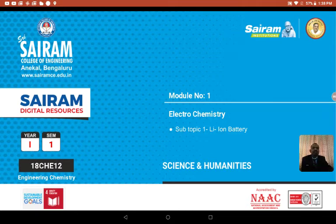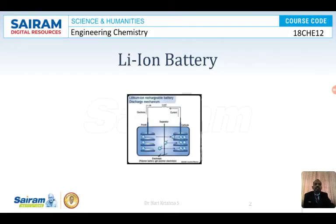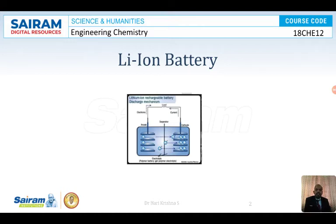Lithium-ion batteries are a different type or category of batteries where lithium or lithium composites will always be used as the anode. The cathode might be inert or some other active species. Examples include lithium manganese oxide battery, lithium carbon battery, and lithium-ion battery. The lithium manganese oxide battery is a primary battery, while the lithium-ion battery is a secondary battery.